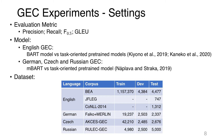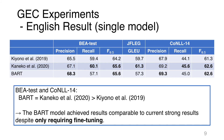We use the development set indicated in the table for fine-tuning. Please note that the English development set is small compared to other languages. For English GEC results using a single model, on CoNLL-14 and BEA, the BART model is better than the model proposed by Kiyono et al. and the results are comparable to those reported by Kaneko et al. So the BART model achieved results comparable to current strong results, despite only requiring fine-tuning.